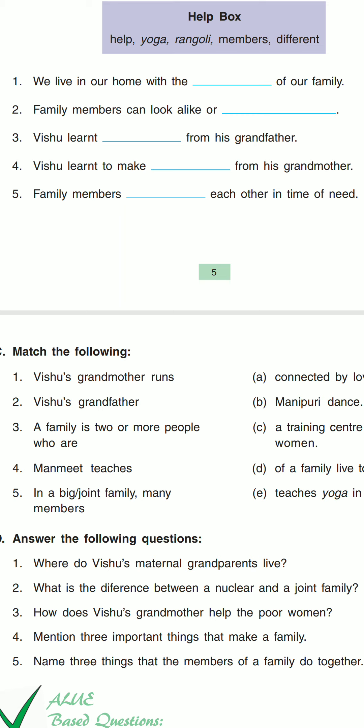Then question number four: Vishu learned to make rangoli from his grandmother. The answer will be 'rangoli.' Then question number five: family members help each other in time of need. The answer will be 'help.'